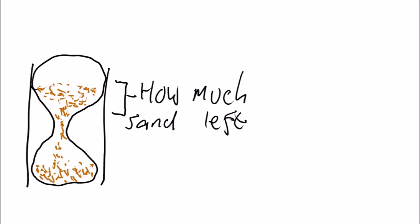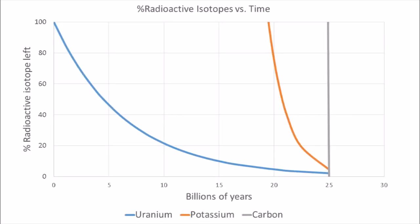It turns out, if you measure how much of a radioactive element is left in a rock, you can tell how old it is — kind of like sand in an hourglass. If you know how quickly the sand falls through the glass, you can measure how much sand is left and calculate how much time has gone by. Each radioactive element decays at a different speed, and depending on how old your sample is, you can use different elements to measure its age.